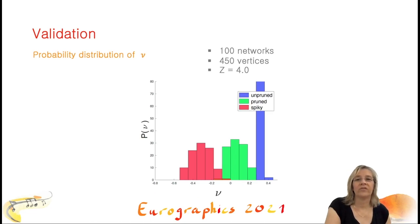In this slide, we show a first statistical validation of our method. We computed 100 pruned networks of 450 vertices each with coordination number Z equal to 4. Here we show the distribution of the Poisson's ratio for the input network in blue, the pruned network in green, and the spiky networks in red. For the pruned networks, the average value of Poisson's ratio is close to 0, while all the spiky networks have a negative Poisson's ratio. The Poisson's ratio clearly decreases.